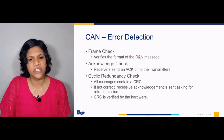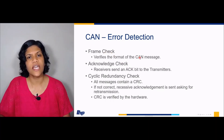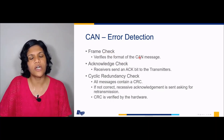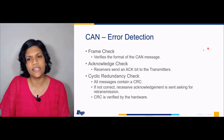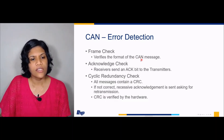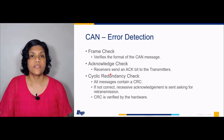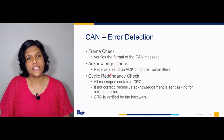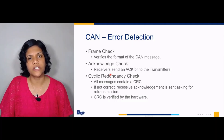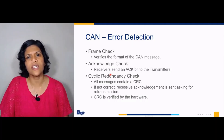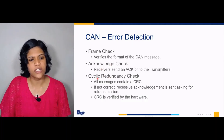Next is frame check. Every CAN message has a format that we will discuss in the next slides, and that format will be checked under frame check. Next is acknowledgement check. Once receivers receive a message, they will send an acknowledgement to the transmitter saying they received the message.